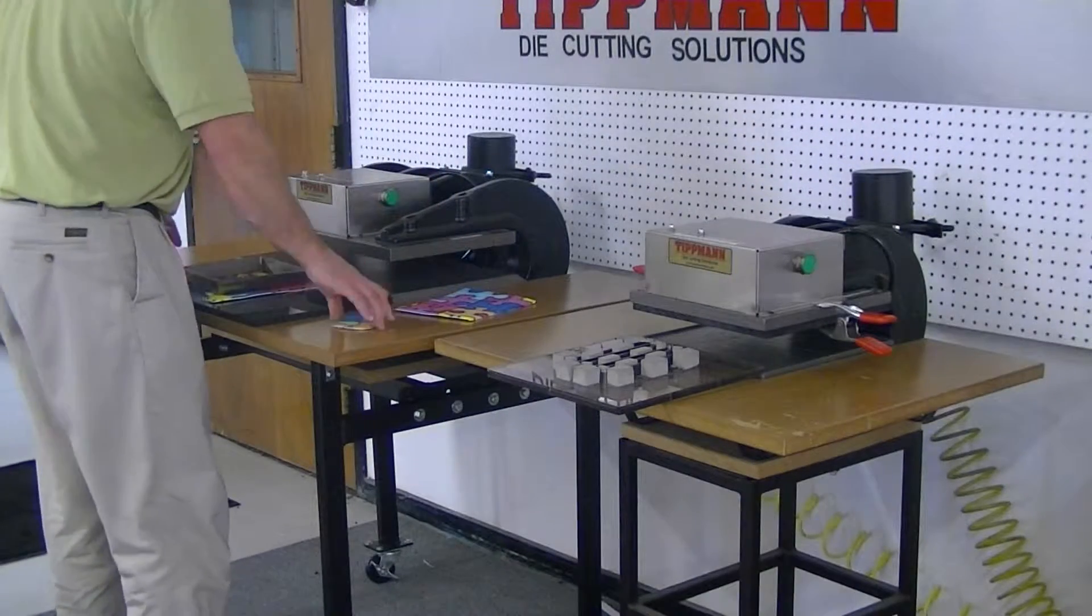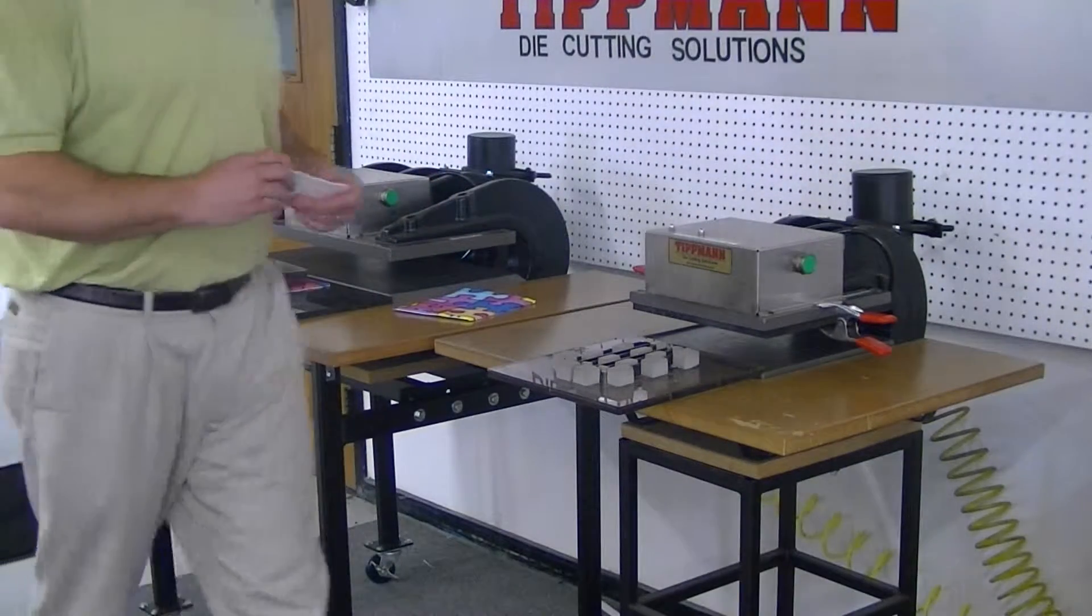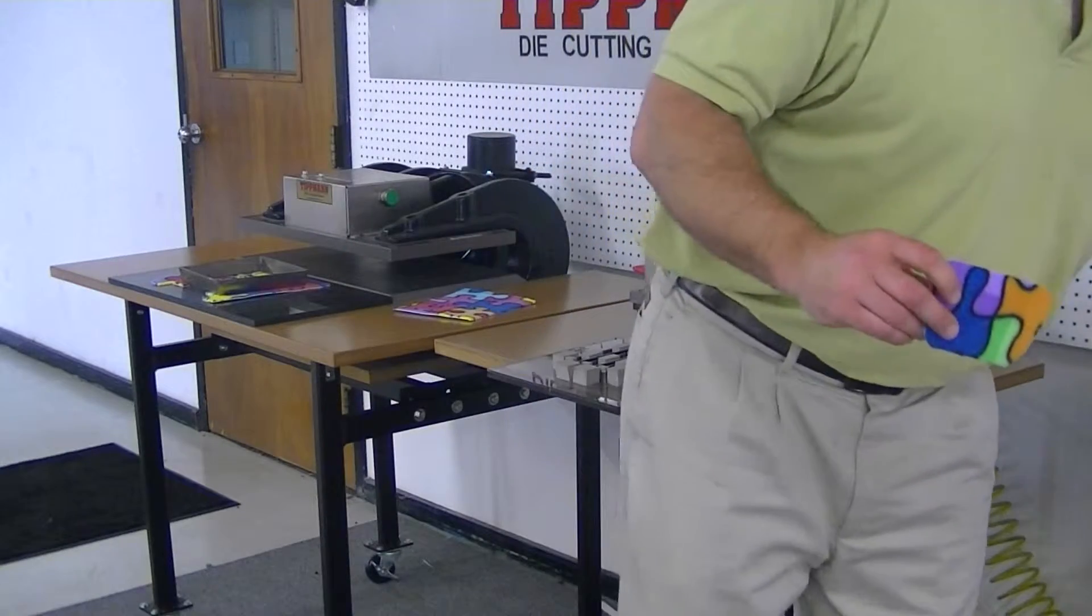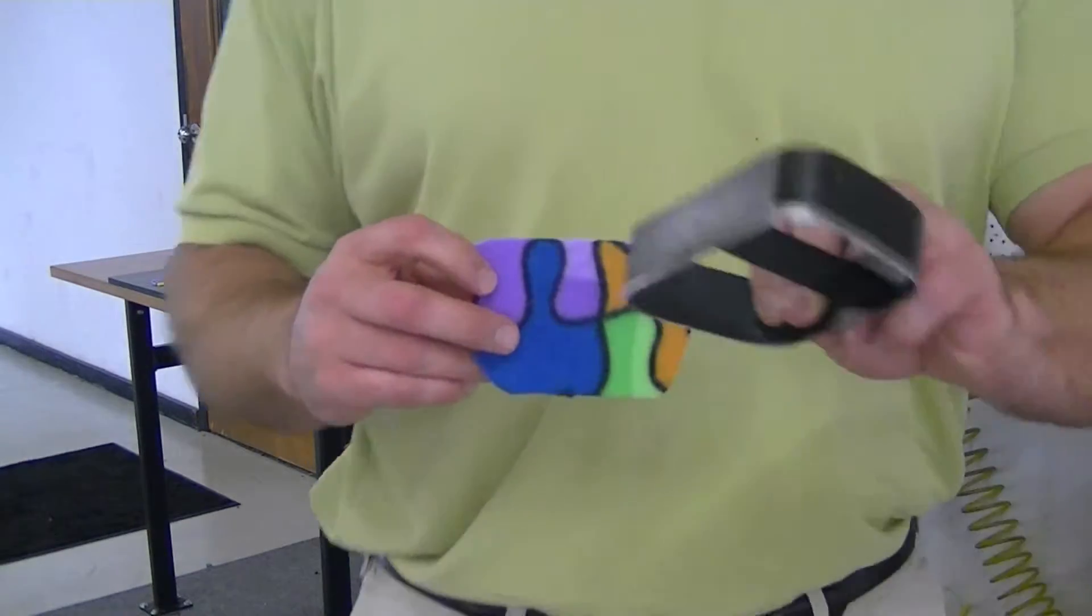The second type of die that I used was an inch and a quarter high clicker die. This is the type of die we build in-house. It's a welded steel die.